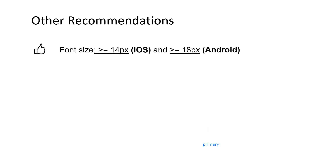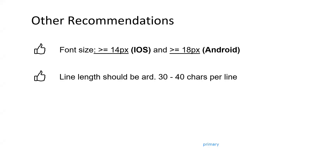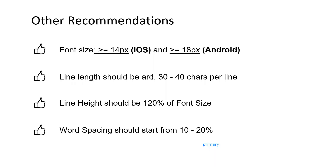Other recommendations: for iOS, they prefer a font size greater than or equal to 14 pixels. For Android, slightly larger — 18 pixels. Line length is recommended at 30 to 40 characters per line. Line height should be bigger than your font size by 20%. Font spacing should start from 10 to 20%. Try to configure all this before you start designing, or tweak it if you've already started, to achieve a more consistent and cohesive font size system.